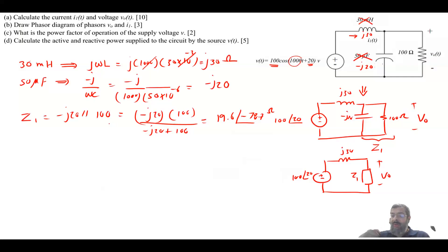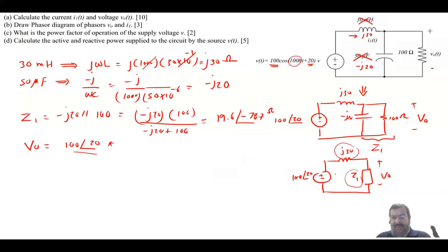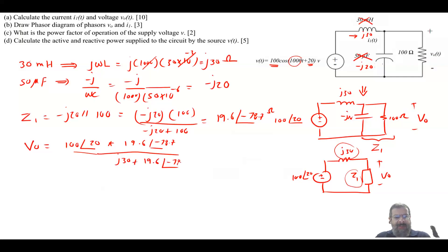I urge you to solve this yourself to practice the calculations. We have two impedances in series — j30 and Z1 — and we want to find V_out using voltage division. V_out equals the supply voltage (100∠20) times Z1 (19.6∠−78.7), divided by the total series impedance (j30 + 19.6∠−78.7).